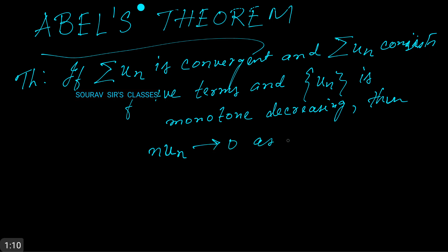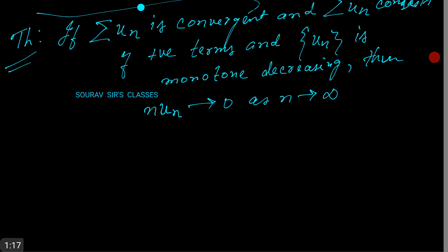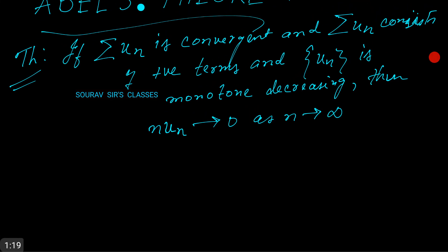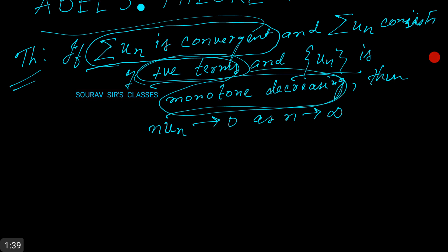This is the general statement of the theorem. Now please note the important terms: Σun, the series, should be convergent; un should consist of only positive terms; and the sequence un should be monotone decreasing. These three terms should be kept in mind when computing if n*un tends to 0 as n tends to infinity.